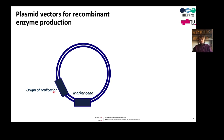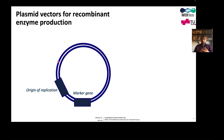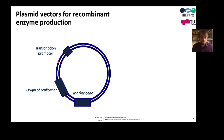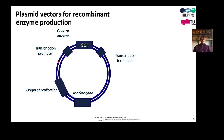To stabilize the plasmid in the cell, there is usually a marker gene with a constitutive promoter that always expresses the gene. Since the plasmid constitutes a metabolic load, cells without the plasmid would grow faster if it were lost. Therefore, we introduce a marker gene that gives the cell a growth advantage under certain conditions, ensuring that growing cells retain the plasmid. There is also the expression cassette, which consists of the transcription promoter, the gene of interest, and the transcription terminator.